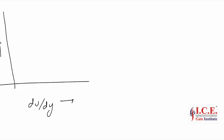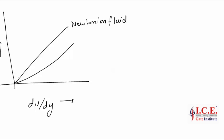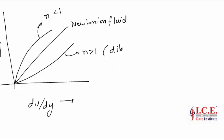A Newtonian fluid follows a straight line on the shear stress vs. du/dy diagram. Non-Newtonian fluids can be of two types: when n is less than 1, the fluid is pseudo-plastic, and when n is greater than 1, the fluid is dilatant. You should know this diagram very well.